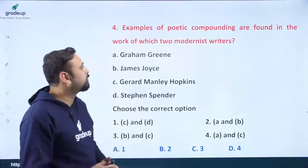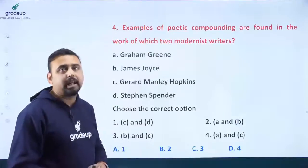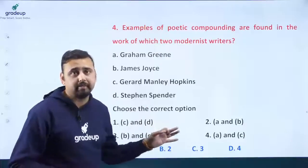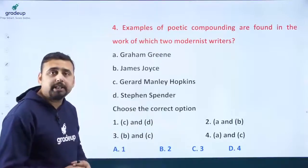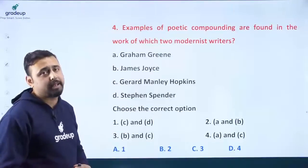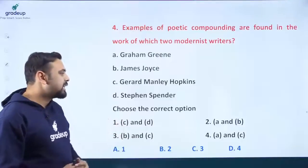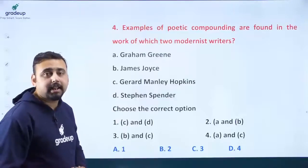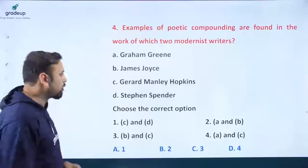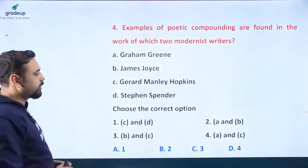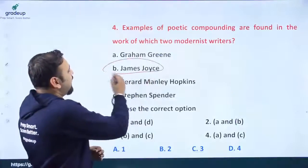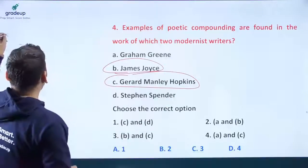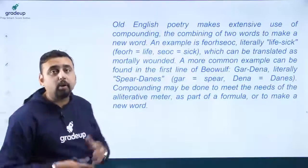Question number four: examples of poetic compounding are found in the work of which two modernist writers? Options: Graham Greene, James Joyce, Gerard Manley Hopkins, or Stephen Spender. The correct answer is option C — James Joyce and Gerard Manley Hopkins.